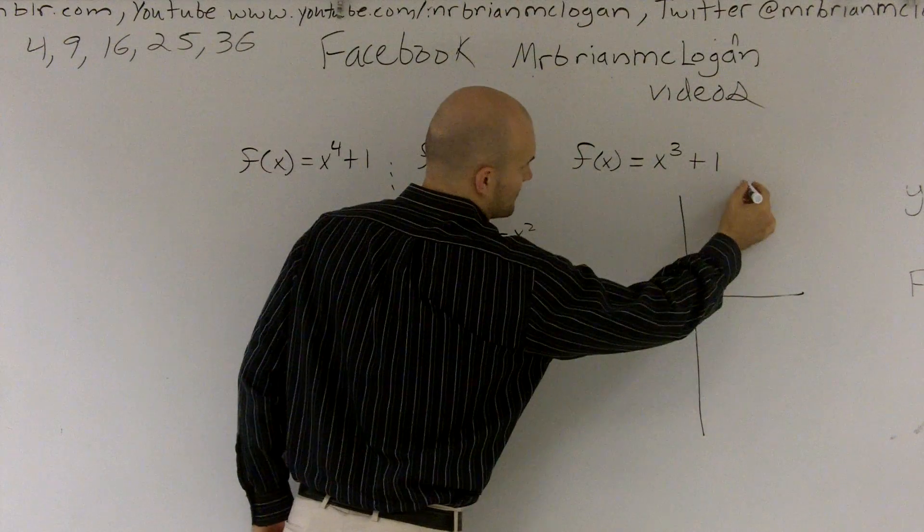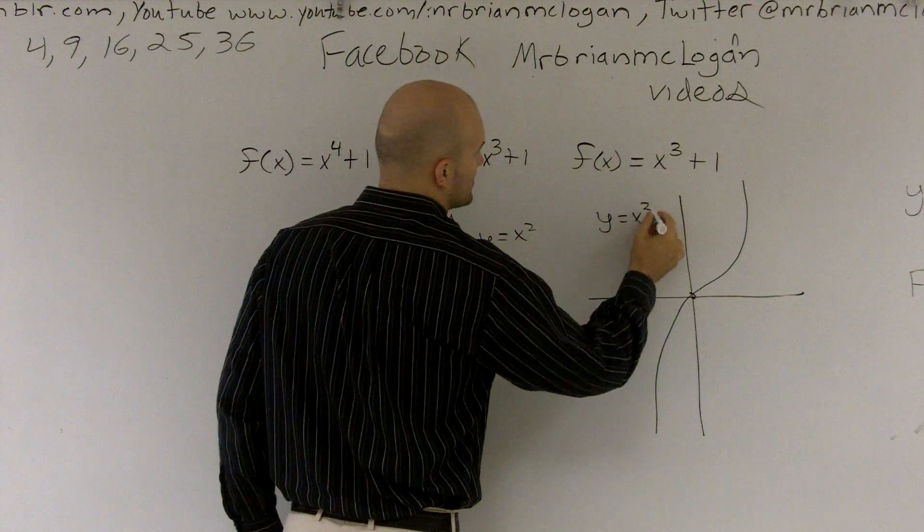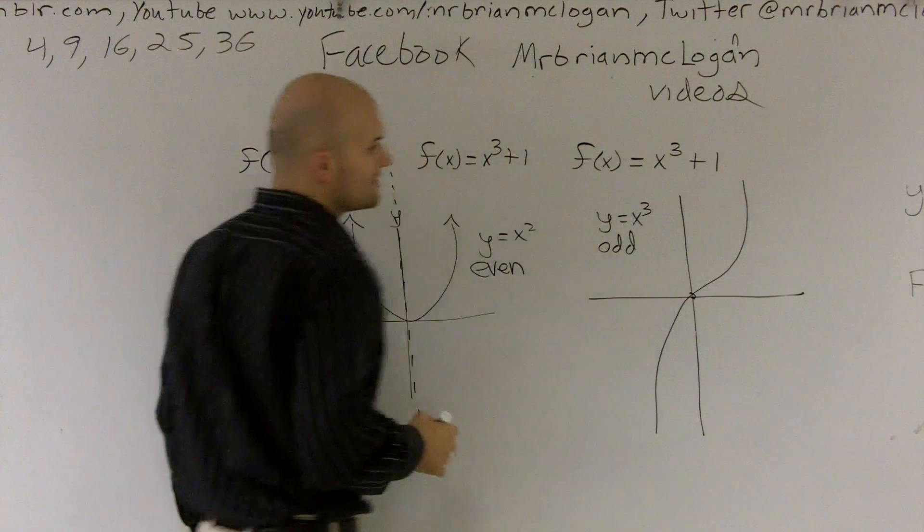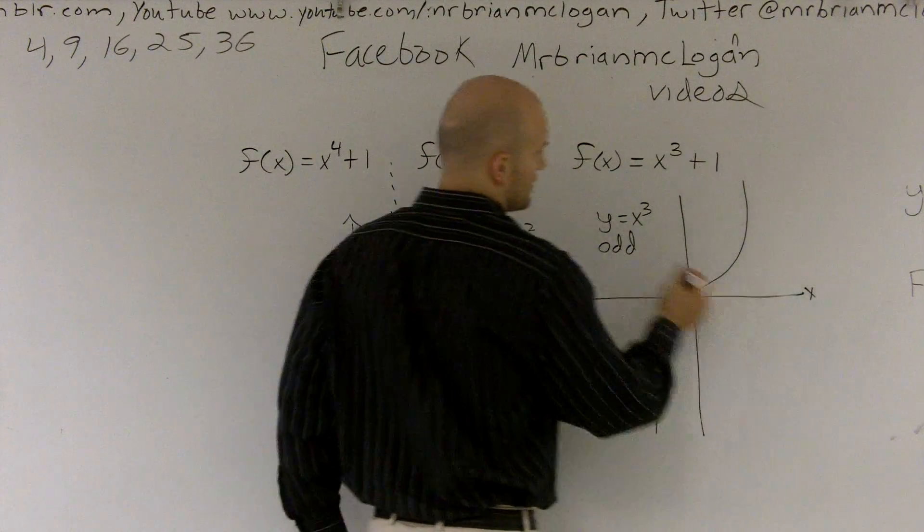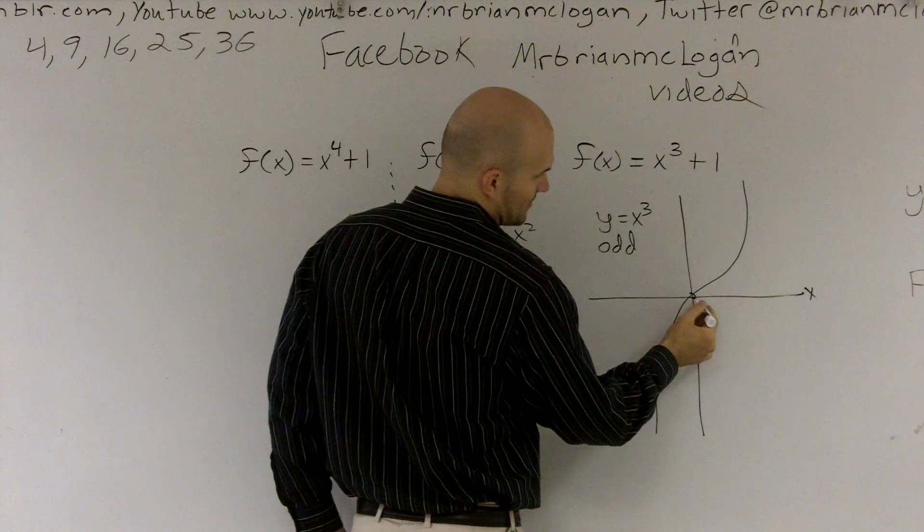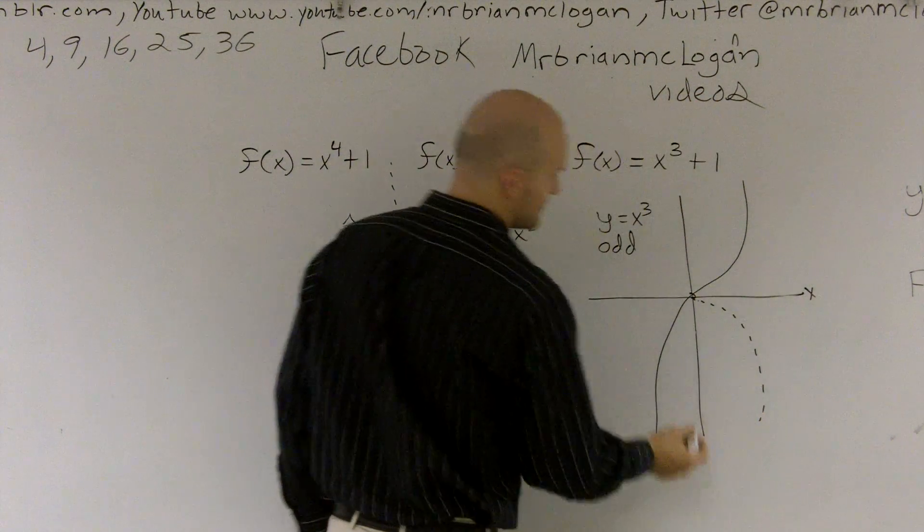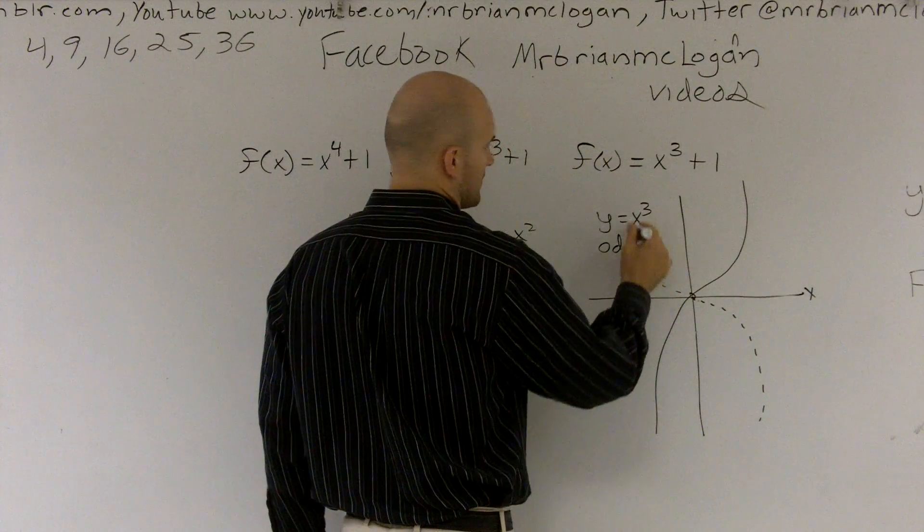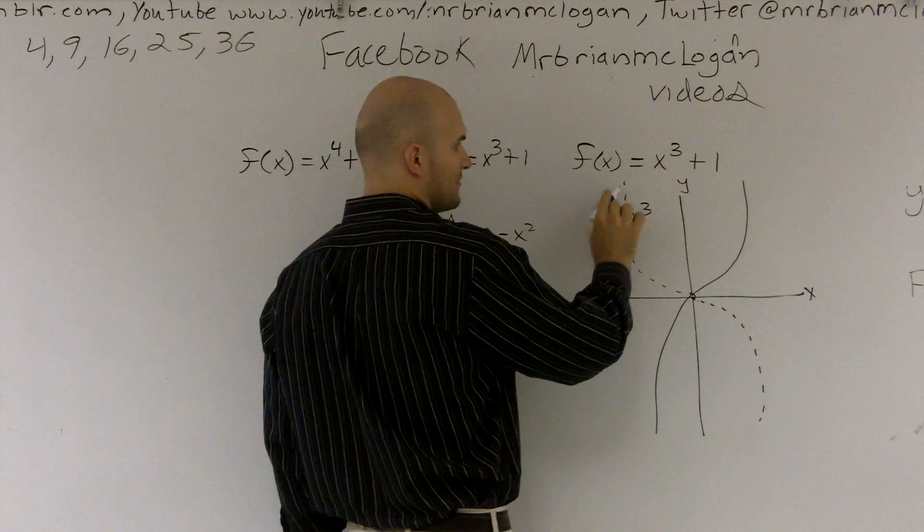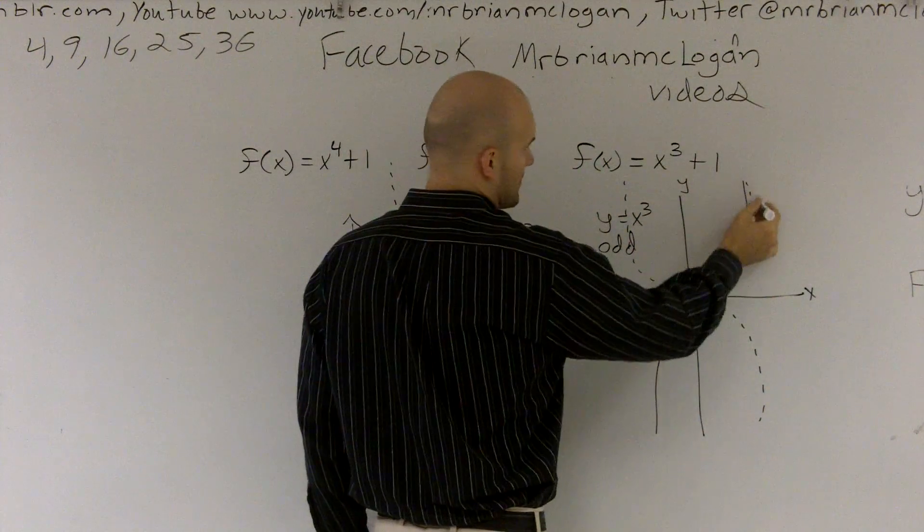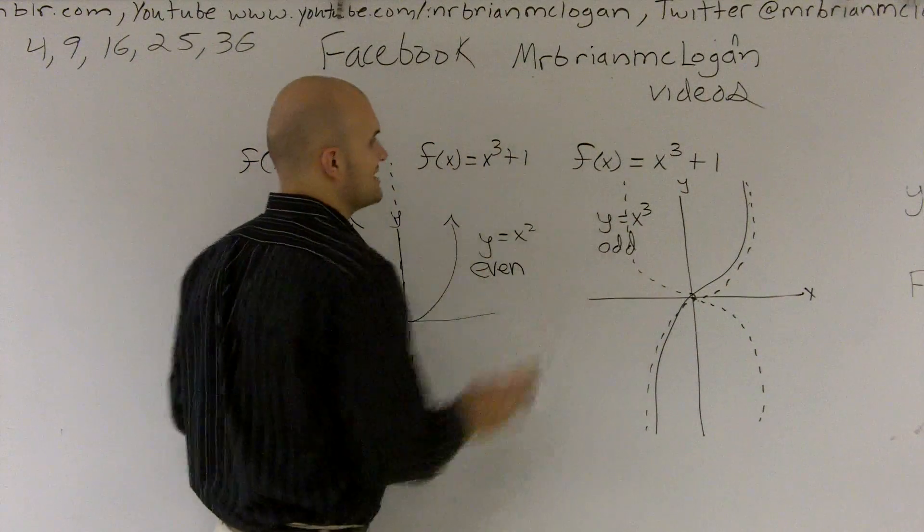The other way is an odd function to talk about our cubic, which would be y equals x cubed. That is an odd function. And the reason why is, if you were to flip it over the x-axis, and then flip it around the y, what you would see is it would be the exact same graph. Therefore, this is odd.